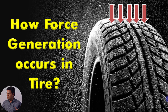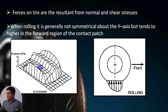Let's discuss the mechanism by which force is generated in tyres. Forces generated in the vehicle tyre are not acting at a single point. Forces on the tyre are the resultant from normal and shear stress generated at the contact patch of the tyre, because the contact patch is the only portion of the tyre that remains in contact with the road surface. Due to the friction generated at the contact patch, multiple forces are generated and acting in different manners.